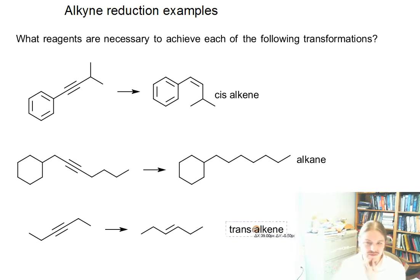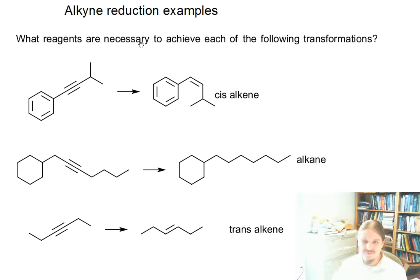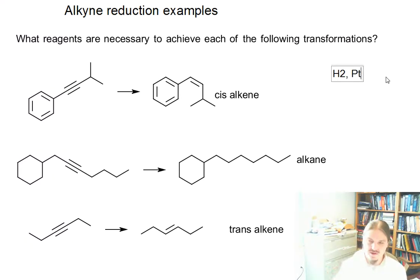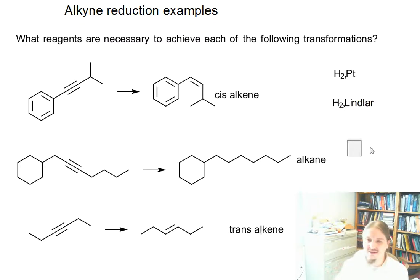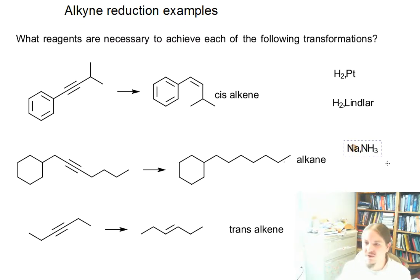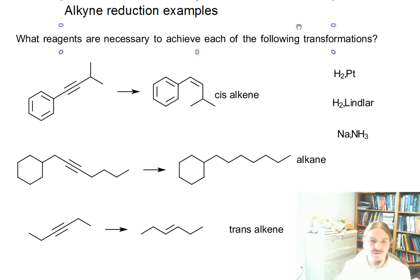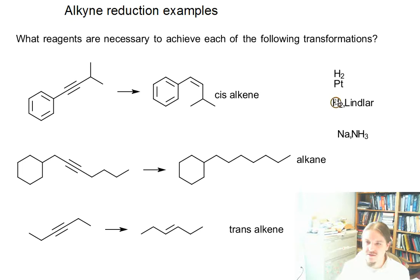And we might also remember that there are three different ways to do alkyne reduction. We can use catalytic hydrogenation. We can use catalytic hydrogenation with a poison catalyst like Lindlar's catalyst. And we can use sodium and ammonia to do a dissolving metal reduction. And now it's just a matter of matching these up to the reagents or to the reactions that they go with.